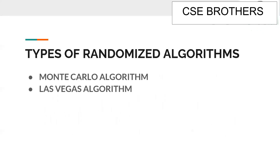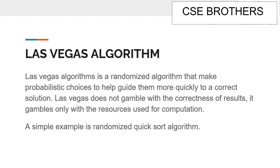There are two types of randomized algorithms: Monte Carlo algorithms and Las Vegas algorithms. Our focus is the Las Vegas algorithm. The Las Vegas algorithm is a randomized algorithm that makes promising choices to guide toward a correct solution more quickly. Las Vegas does not gamble with the correctness of the result — it gambles only with the resources used for computation.